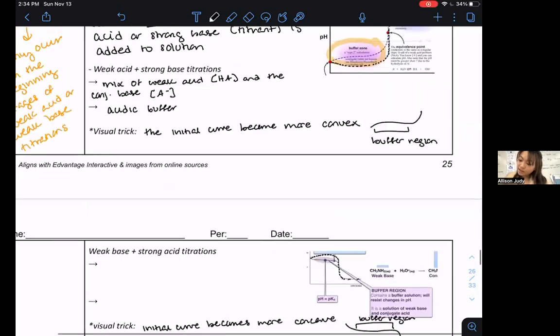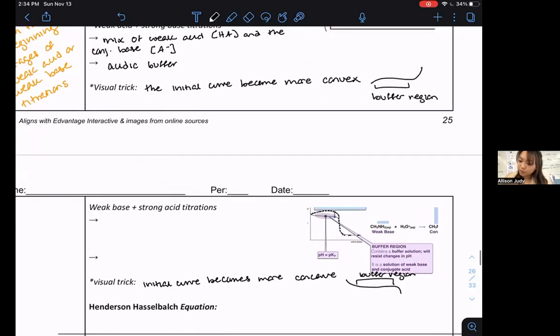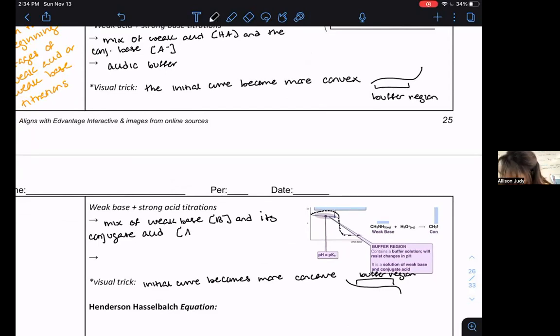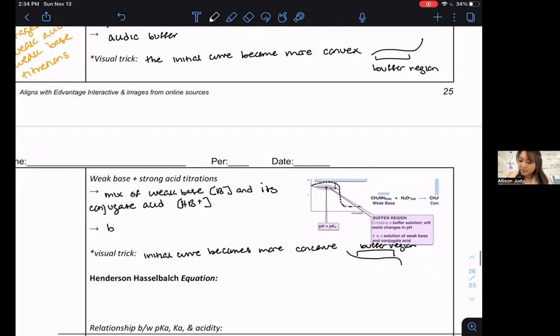And of course, paralleling what we described above, at the particulate level, this is showing us that we now have a mix of weak base concentration and its conjugate acid present, HB+. And we would call this region, the formation of a basic buffer, aligning to the fact that it is a buffer created from a weak base solution.